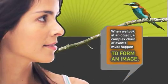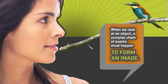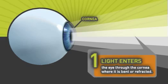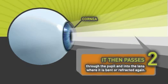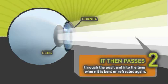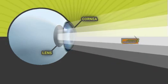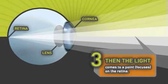When we look at an object, a complex chain of events must happen to form an image. First, light enters the eye through the cornea where it is bent or refracted. Then it passes through the pupil and into the lens where it is bent or refracted again, and then light comes to a point or focuses on the retina.